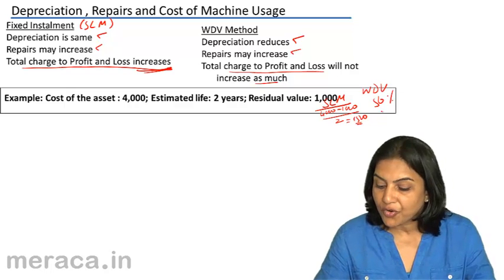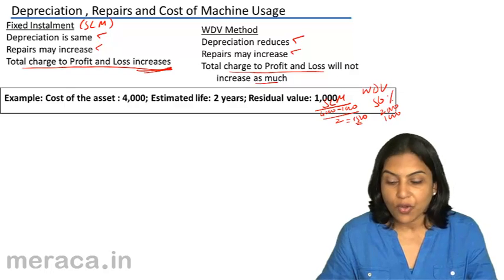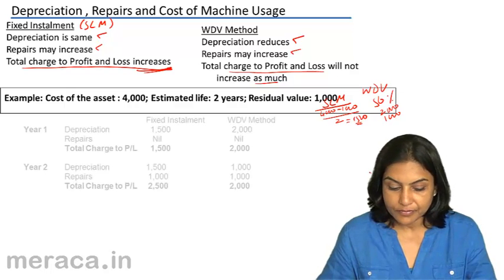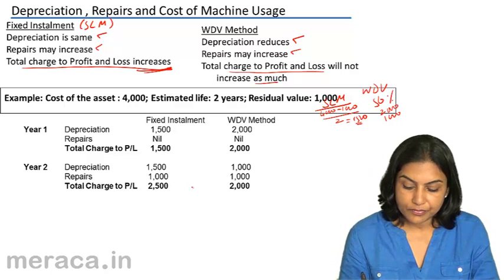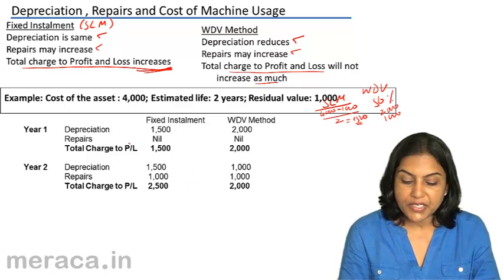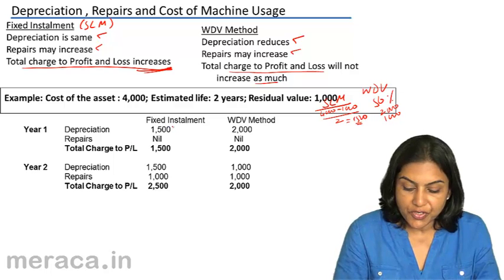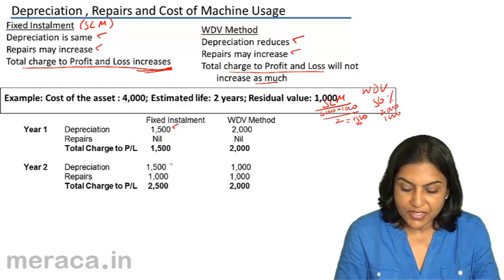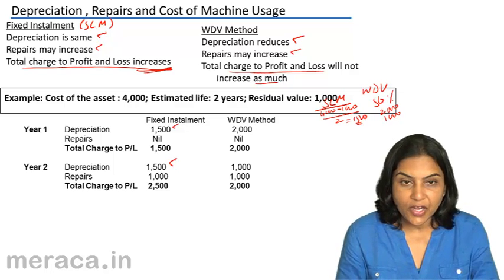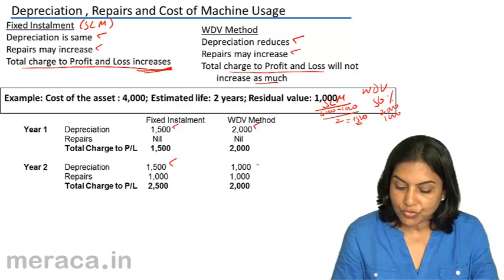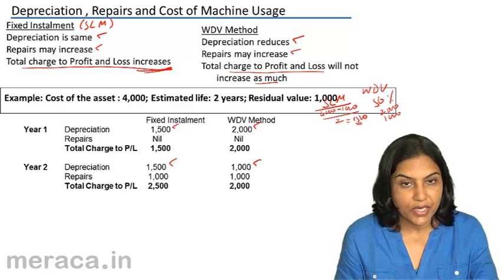Under the written down value method, we had computed that depreciation would be 2000 in the first year and 1000 in the second year. Under the fixed installment method, depreciation is 1500 in the first year and fixed at 1500 in the second year as well.